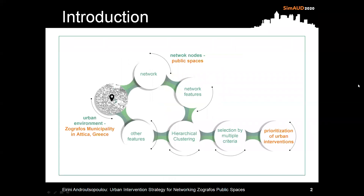The methodology starts with the configuration of urban networks, by defining nodes — in this case the public spaces of Zografos Municipality in Greece — and connections, and proceeds to export data per network node. With the application of hierarchical clustering, network and urban characteristics of public spaces are grouped and analyzed, enabling the gradual selection of nodes that meet multiple criteria.